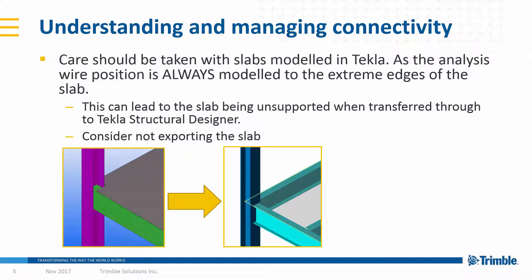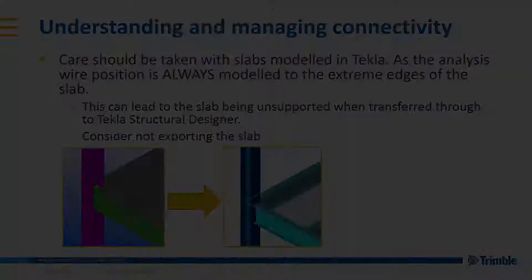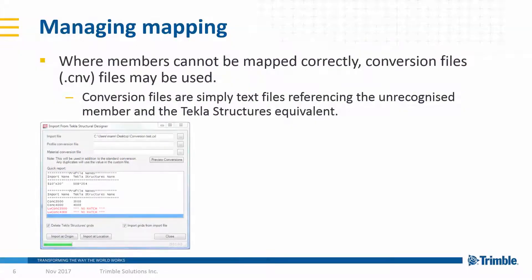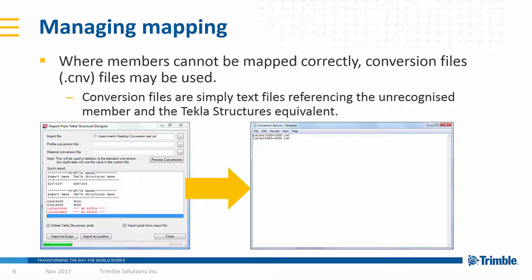The newly generated slabs can also be disabled from any export processes. Where members cannot be mapped correctly automatically by the import or export wizard, conversion files may be used. These are simple text files which stipulate the part or attribute references that cannot be mapped and the intended substitution. These files can be amended and added to over time so that a company-wide mapping file can be generated.